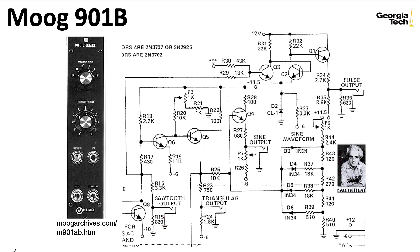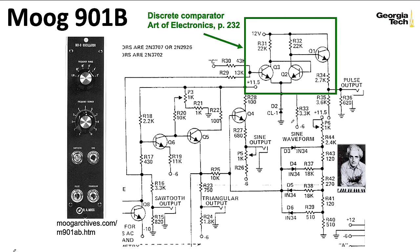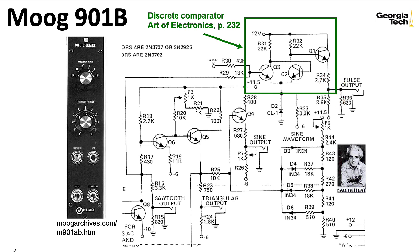The sawtooth also goes to a set of circuitry in the upper right which — as I looked up in the Art of Electronics — turns out to be a discrete comparator, and that's what they use to generate the pulse output. The raw output was considered too hot so there's a divide-down here. We also have some circuitry that turns the sawtooth wave into a triangle wave, and what's particularly interesting is that this sawtooth-to-triangle wave shaper is not at all like the rectifier-based wave shapers we've seen previously.